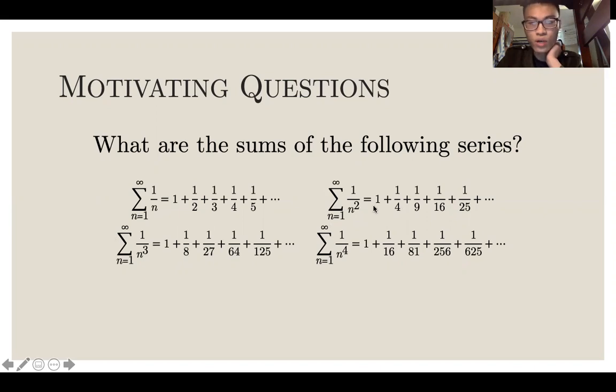Here is the squares: one plus a fourth plus a ninth plus a sixteenth plus one twenty-fifth. Here you see the cubes: an eighth, one twenty-seventh, one sixty-four, one over one twenty-five, and the fourth powers: one sixteen, one eighty-first, one over two fifty-six, and one over six twenty-five.